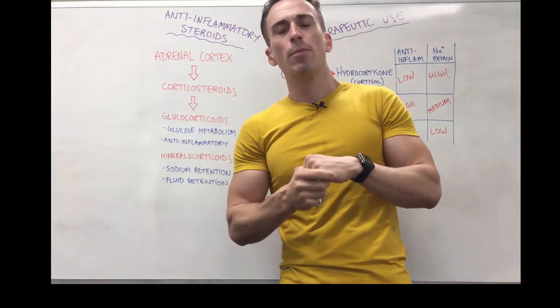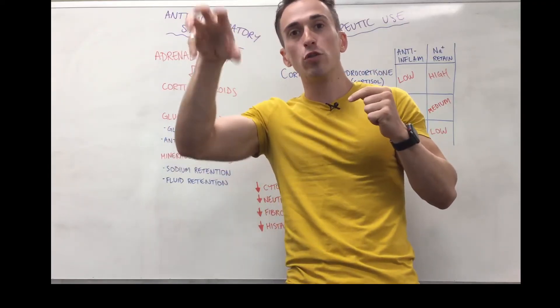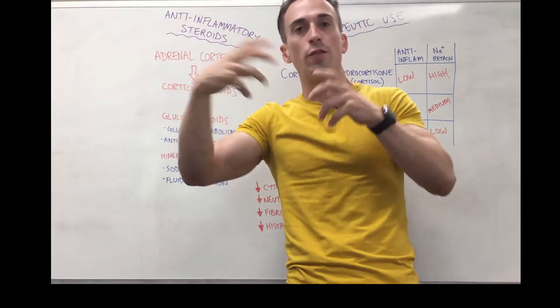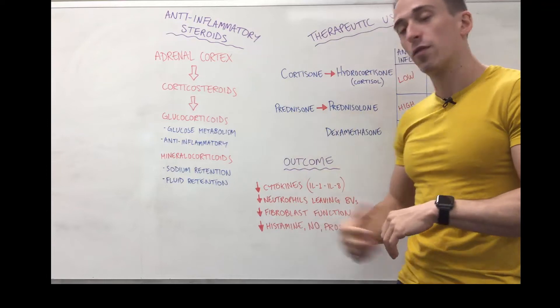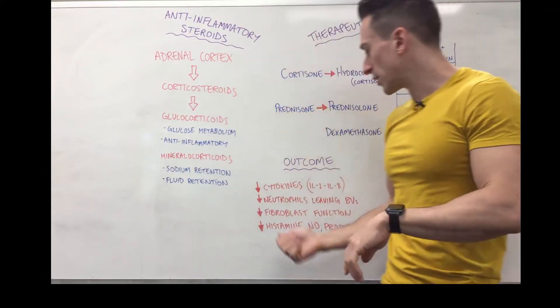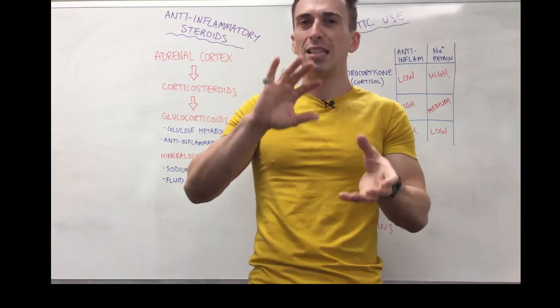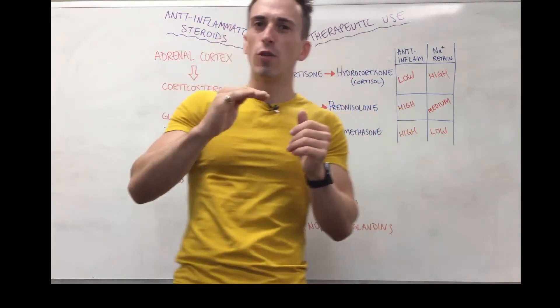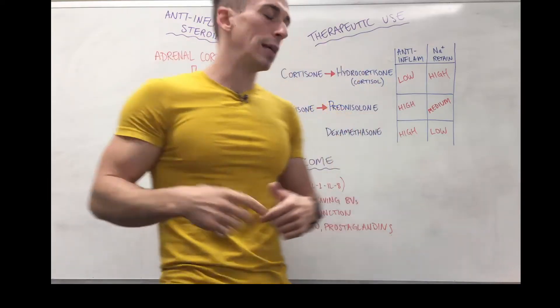Why is this important? Because when you have inflammation, when neutrophils leave the blood vessels, they go to the tissue that's damaged to help fight off the infection, and what these anti-inflammatory steroids do is stop this from happening. It also down-regulates fibroblast function, and this means it can actually play a role in connective tissue, and so if it decreases its function, it may decrease your ability to regenerate connective tissues.